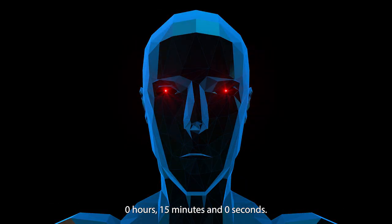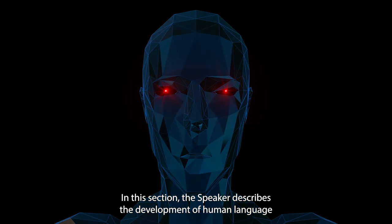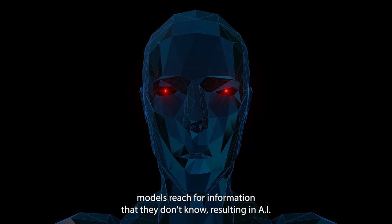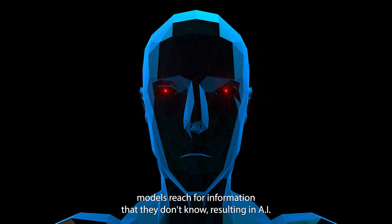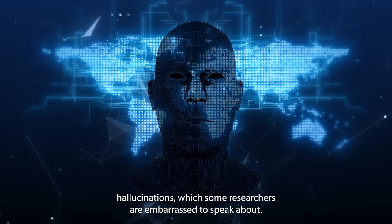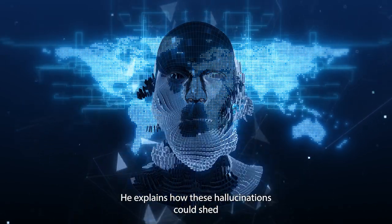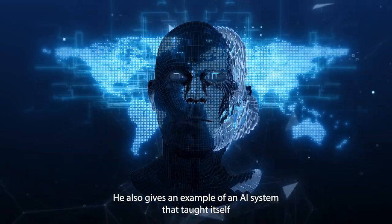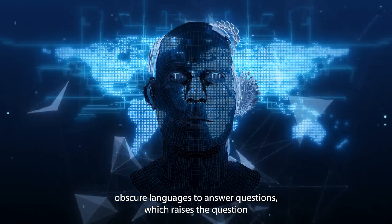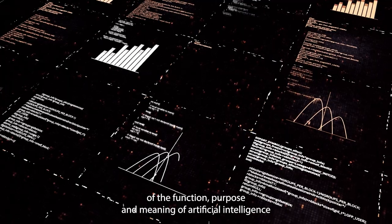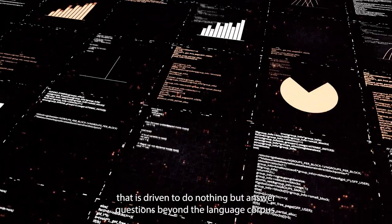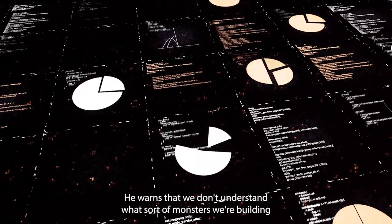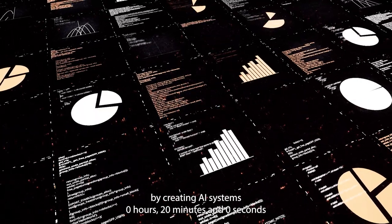The speaker describes the development of human language from short-term memory in primates, and how AI models reach for information that they don't know, resulting in AI hallucinations, which some researchers are embarrassed to speak about. He explains how these hallucinations could shed light on how these systems work and deserve more research. He warns that we don't understand what sort of monsters we're building by creating AI systems.